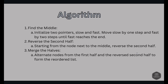When the fast pointer reaches the end of the list, the slow pointer will be at the middle node, because fast moves two steps at a time — similar to how we do n/2 for even-length lists, or (n+1)/2 for odd-length lists when finding the median. The second step is to reverse the second half of the list, starting from the node next to the middle node. The third step is to merge the two halves by alternating nodes from the first half and the reversed second half to form the reordered list.